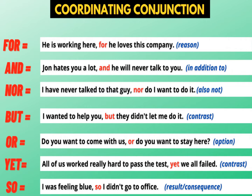'Nor' means 'also not': 'I have never talked to that guy, nor do I want to.' 'But' is used when there is a contrast: 'I wanted to help you but did not let me do it.' Like, 'My sister is smart but lazy.' So there is a contrast between the two words intelligent and lazy. 'Or' is used when there is an option to choose: 'Do you want to come with us or stay here?' or 'Do you want a coffee or tea?'